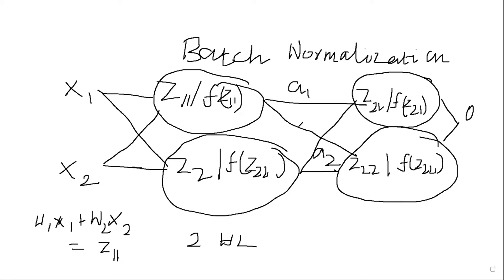Now a1 and a2 will be the inputs to the next hidden layer, and this process repeats until the last layer. So we have two inputs x1 and x2, and z11 = w1*x1 + w2*x2. The activation function is applied and the output is fed into the next hidden layer, where there is another activation function. This is how the process continues.